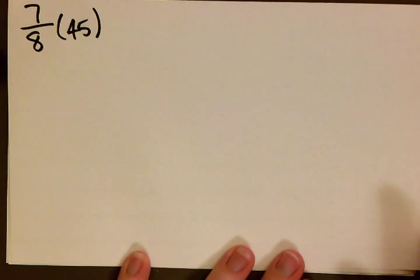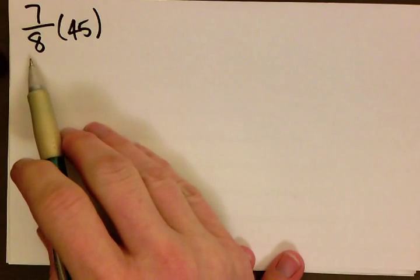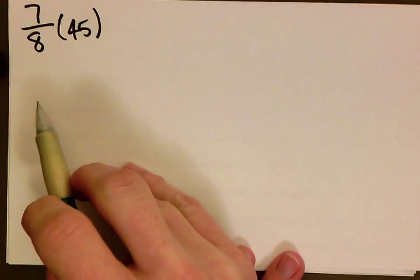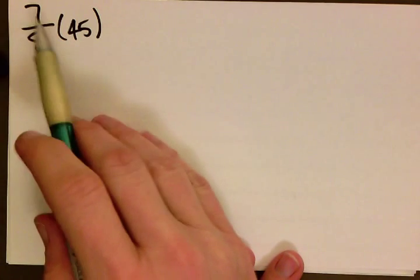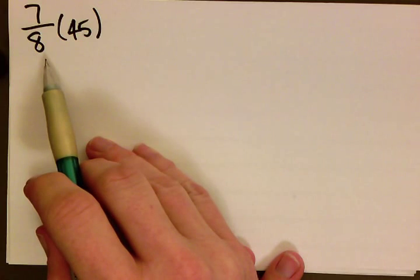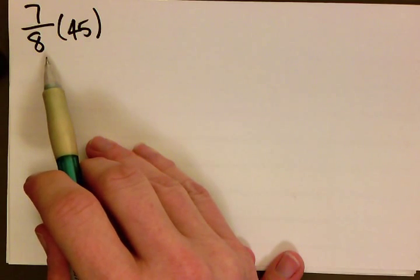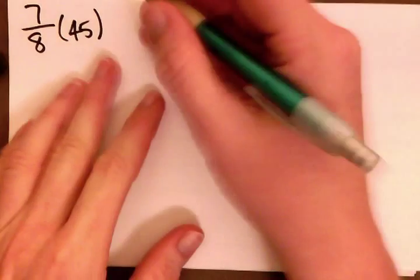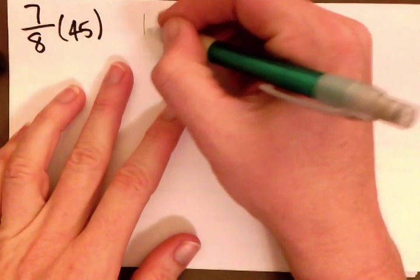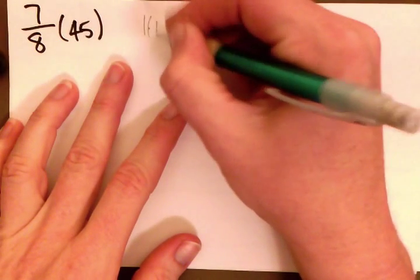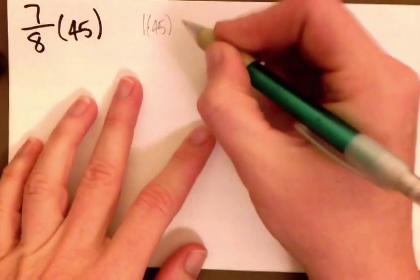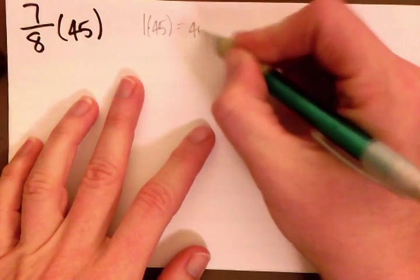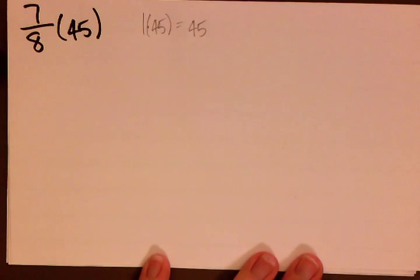The first thing we want to do is estimate. When we have a fraction we always want to estimate: is it closer to 1 half or is it closer to 1? In this case we have 7 eighths, and 7 eighths is almost 8 eighths, and 8 eighths is 1. So 7 eighths is much closer to 1 half than 1. So for our estimation we are going to have 1 multiplied by 45, and when we do we get 45. So that's our estimation.